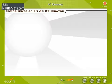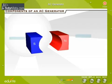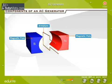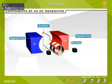Components of an AC generator. An AC generator consists of a magnet with concave cylindrical poles, an armature, and a current-collecting arrangement. The current-collecting arrangement consists of slip rings and brushes.